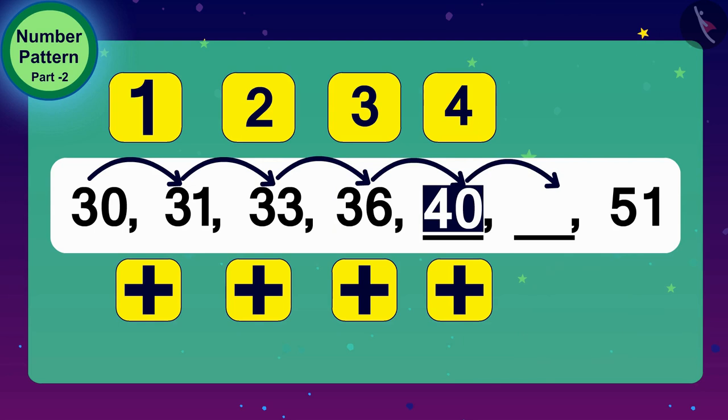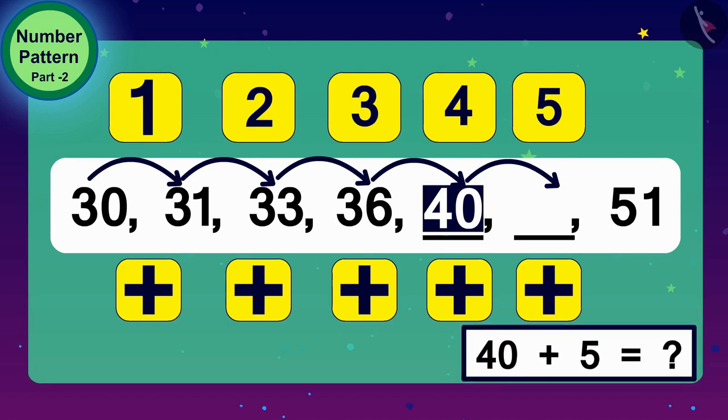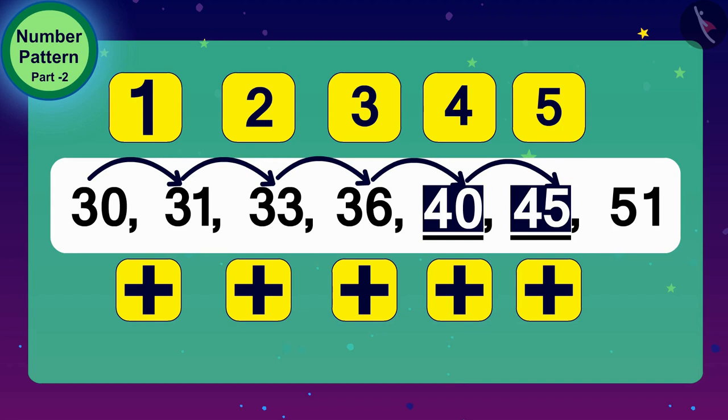And what shall we do to get the next number? That's correct. Add 5 to 40. Adding 5 to 40. 45. Oh, wow! We filled in the blanks of this increasing number pattern.